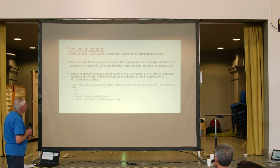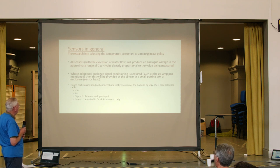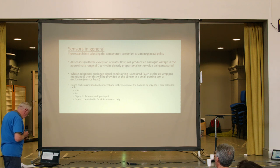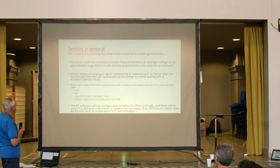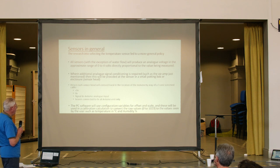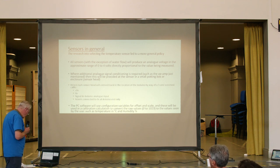I end up using a 3-core screened cable. One core provides the plus 5 volts for the sensor, one is 0 volts, and one is the signal to the Arduino analog input. The screen is connected to 0 volts at the Arduino end only. PC software uses configurable variables for offset and scale, used in a calibration calculation to convert the raw values from the analog inputs to the values seen by the user, such as temperature in degrees C and humidity in percent.